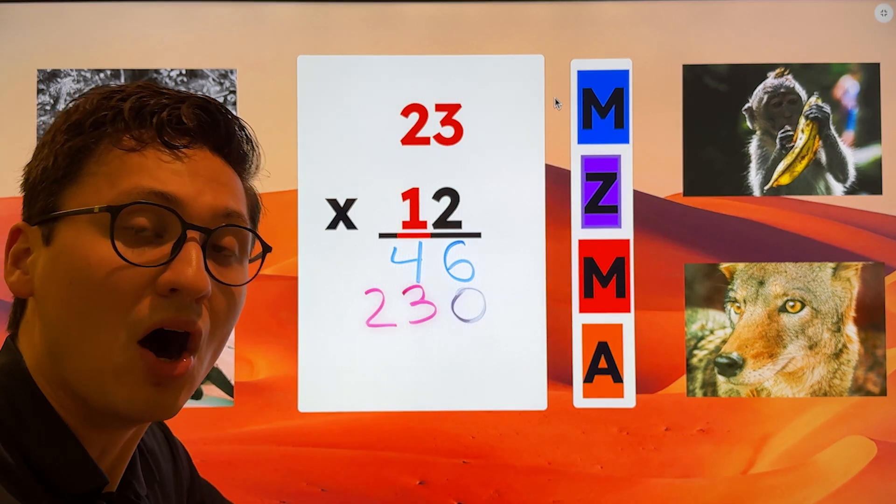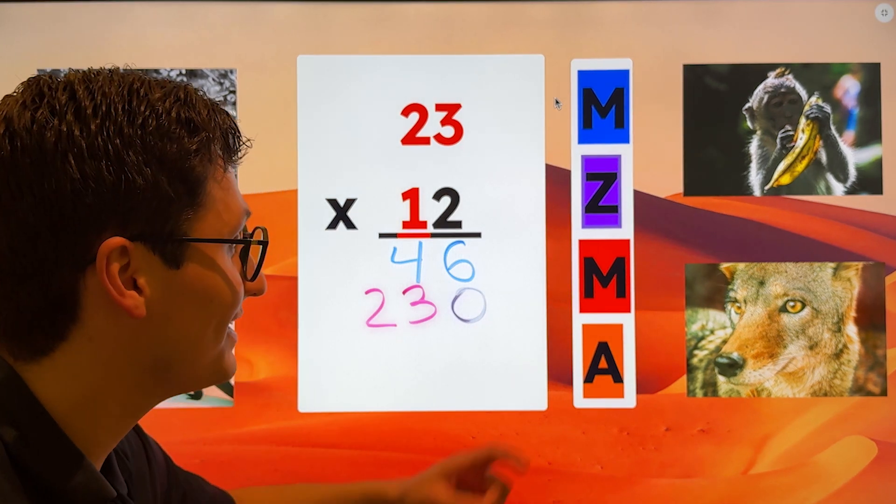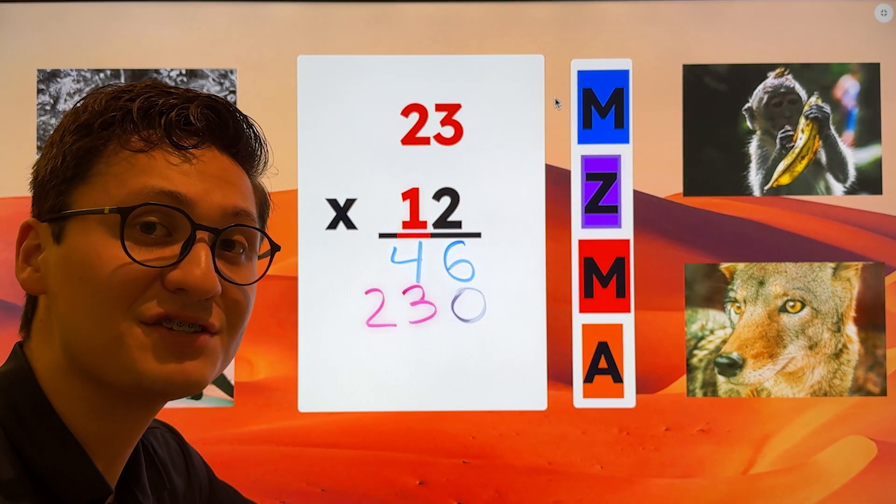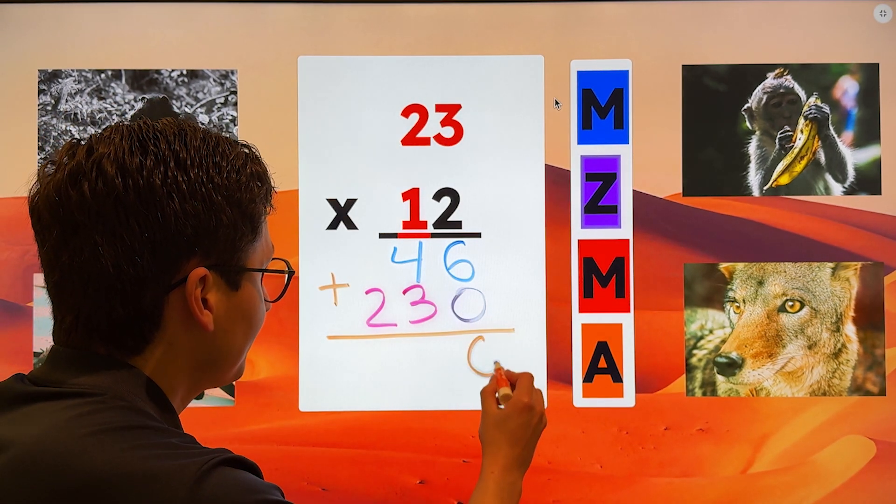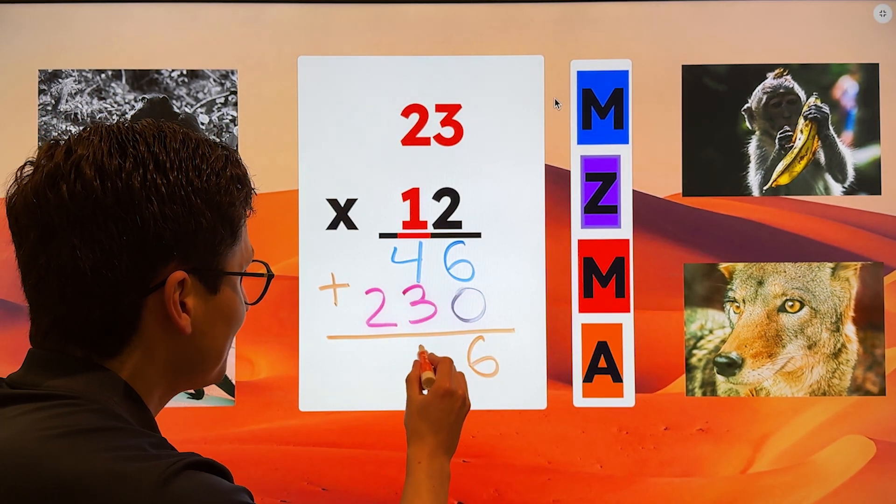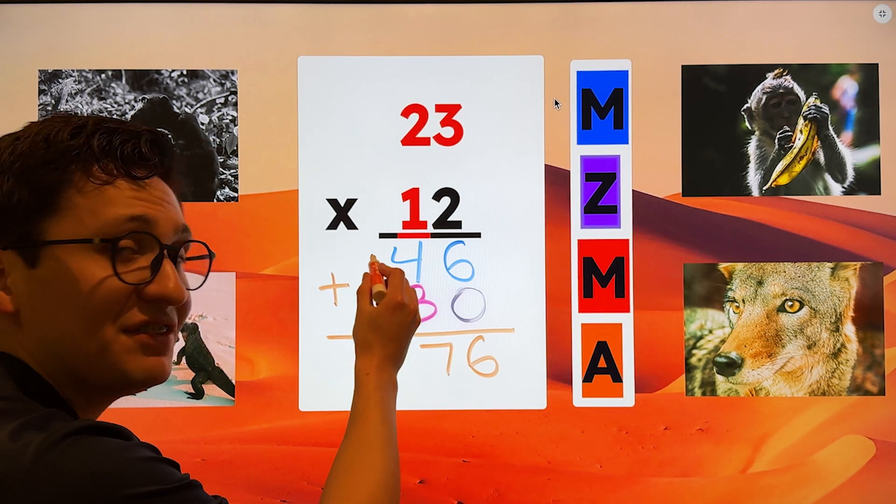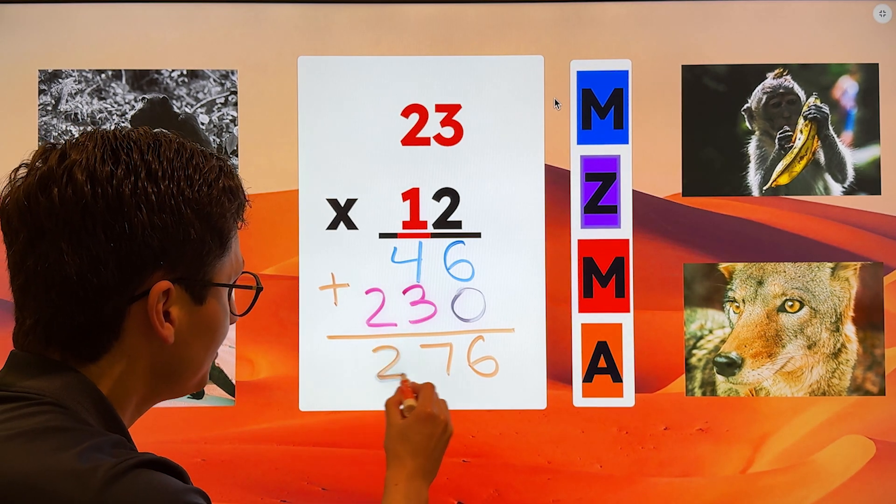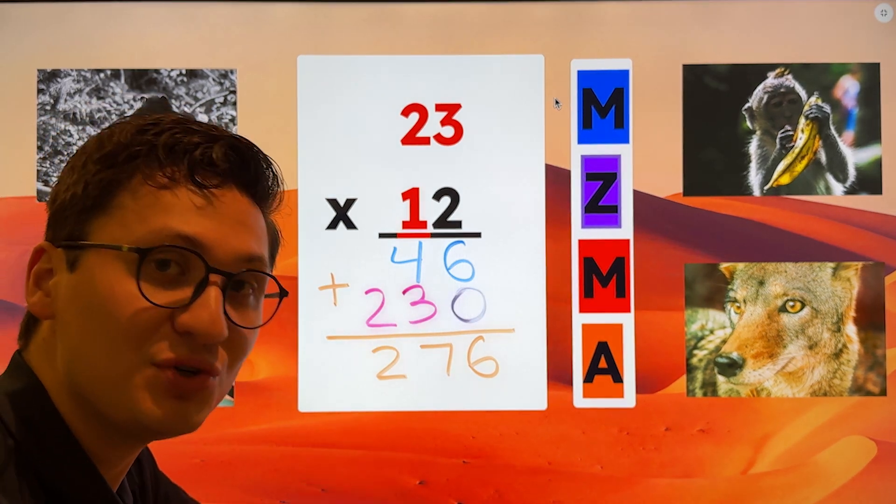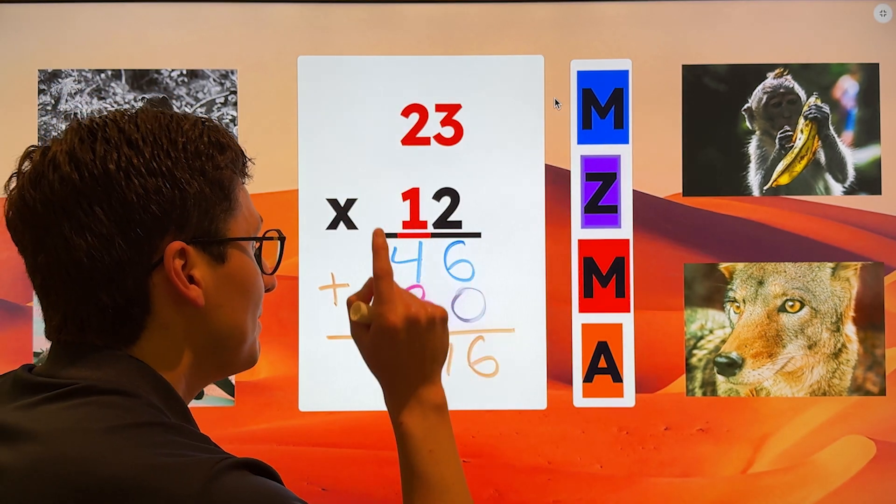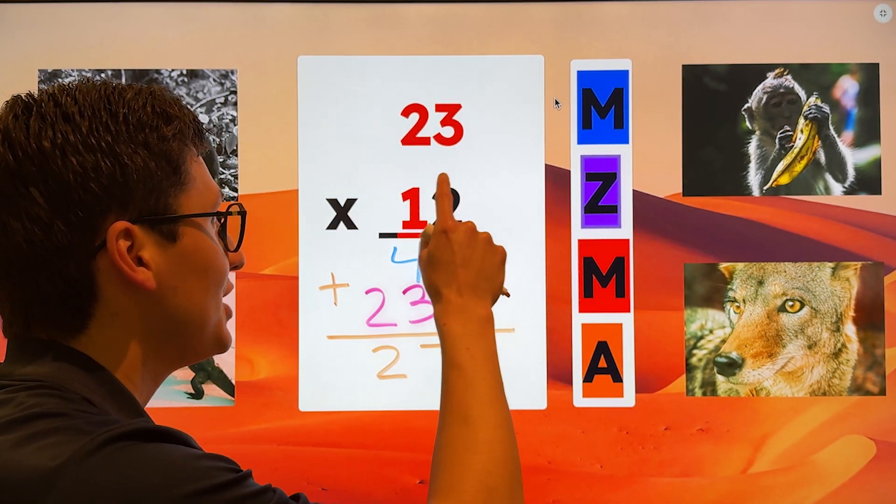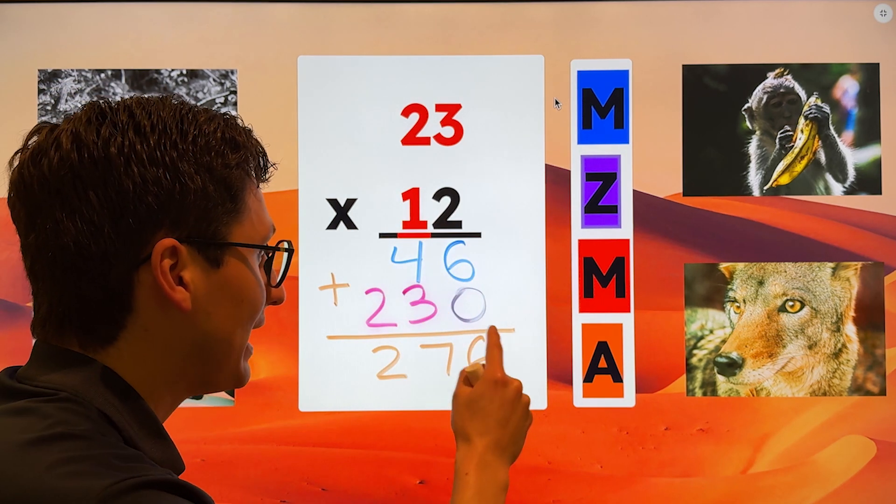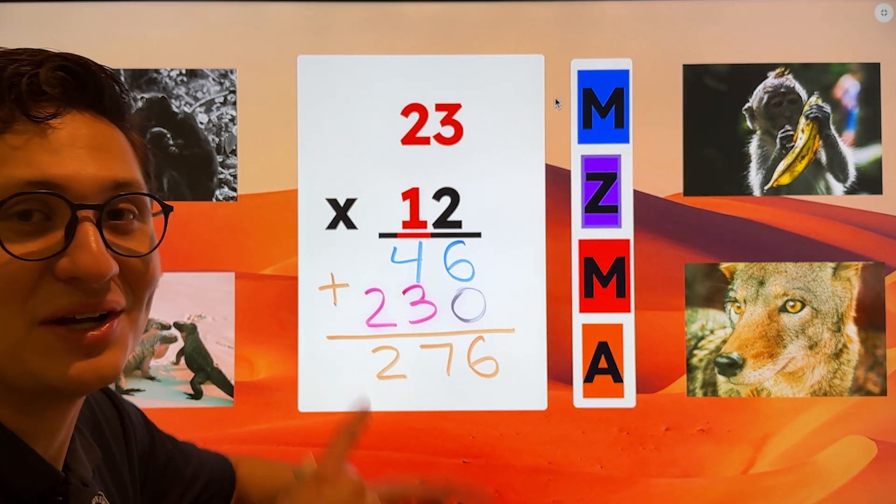All that we have left to do is A, which stands for add. So six plus zero is six, four plus three is seven, and two plus nothing is two. So how did we solve this? Using the many zoos, many animals strategy, which stands for multiplication zero, multiplication add. Now let's go on to the next problem.